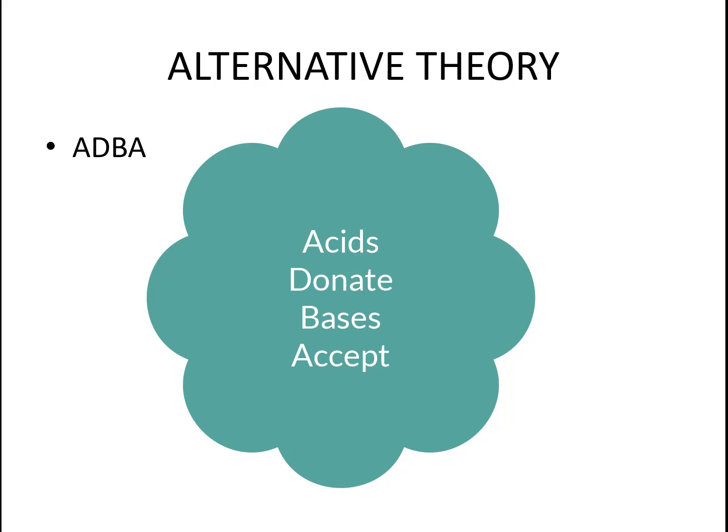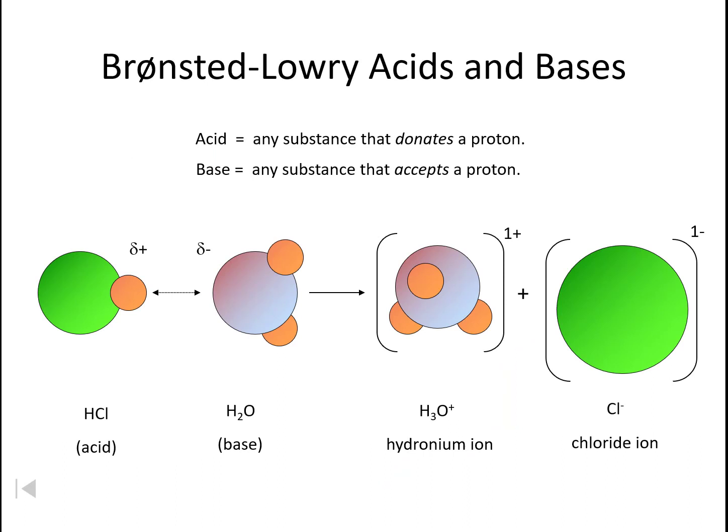We're going to look at how that plays into the alternative theory. In the Bronsted-Lowry theory of acids and bases, an acid is any substance that donates a proton — that's your A, D, acids donate. And bases are any substance that accepts a proton — bases accept. ADBA: acids donate, bases accept protons.